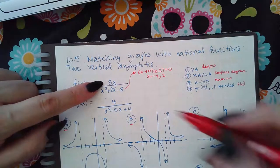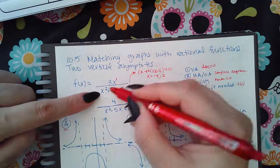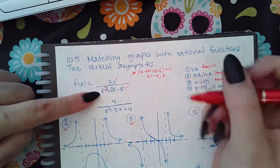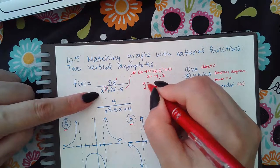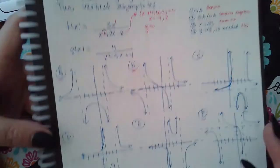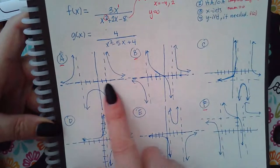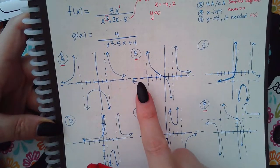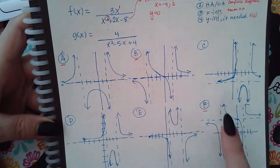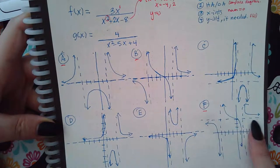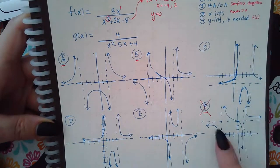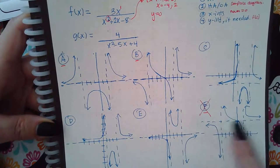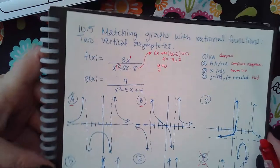Now I'm going to verify the horizontal asymptotes. The degree of the numerator is one and the degree of the denominator is two, which means the horizontal asymptote is automatically y equals zero. Looking at A, the horizontal asymptote is at y equals zero. Same for B, but not for F — F's horizontal asymptote is up at three instead of zero. So F is eliminated.